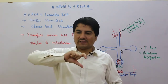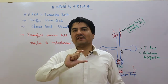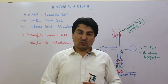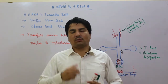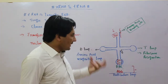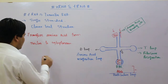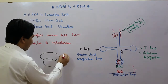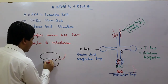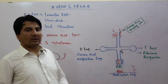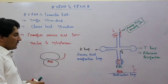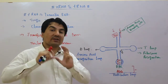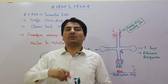Messenger RNA attached to a ribosome basically carries a code. That code needs to be decoded. For example, the ribosome is here, and messenger RNA carries a codon — say A-U-G — this is a codon, a triplet. The transfer RNA comes and reads what code is present in that messenger RNA.